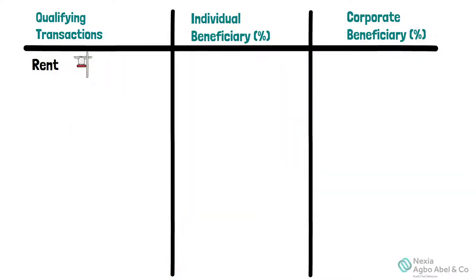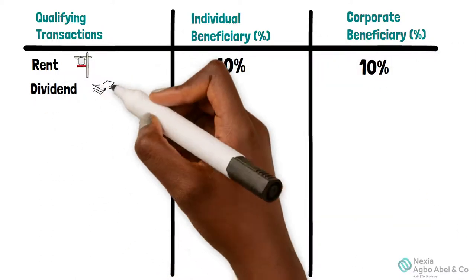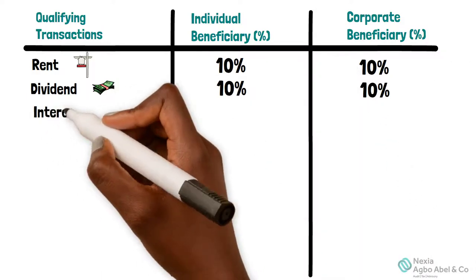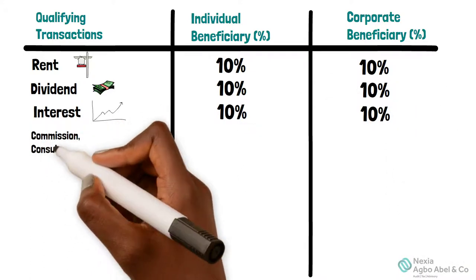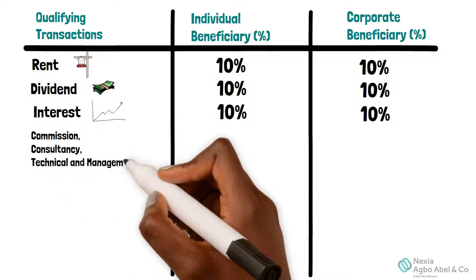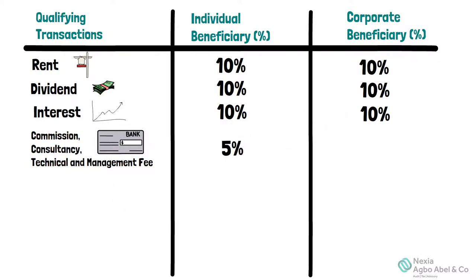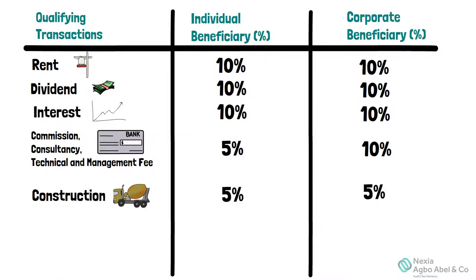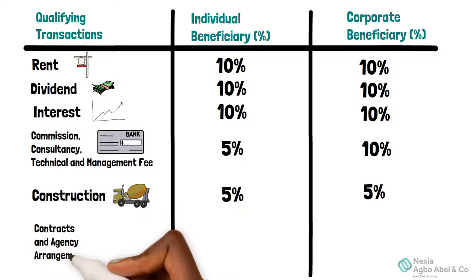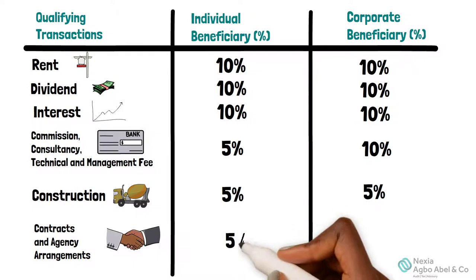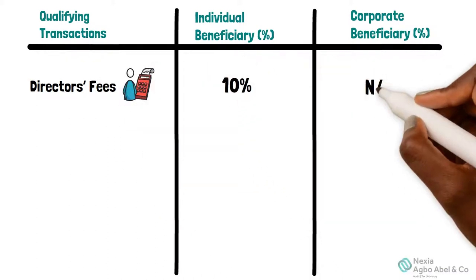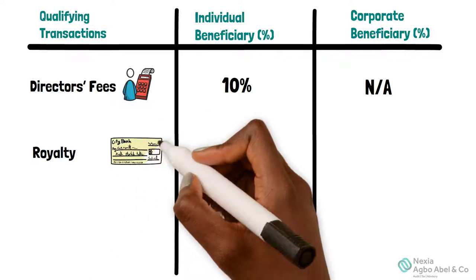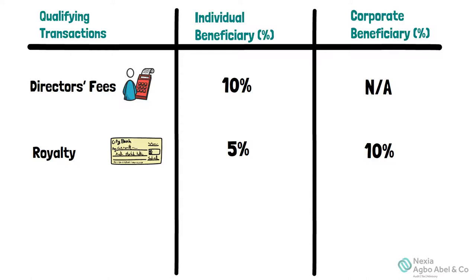Rents: individual beneficiaries pay 10%, corporate beneficiaries pay 10%. Dividends: individual beneficiaries pay 10%, corporate beneficiaries pay 10%. Interests: individual beneficiaries pay 10%, corporate beneficiaries pay 10%. Commission, consultancy, technical and management fees: individual beneficiaries pay 5%, corporate beneficiaries pay 10%. Constructions: individual beneficiaries pay 5%, corporate beneficiaries pay 5%. Contracts and agency arrangements: individual beneficiaries pay 5%, corporate beneficiaries pay 5%. Director's fees: individual beneficiaries pay 10%, non-applicable for corporate beneficiaries. Royalties: individual beneficiaries pay 5%, corporate beneficiaries pay 10%.